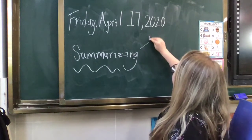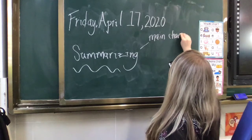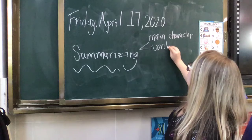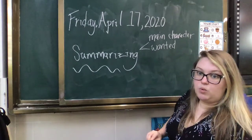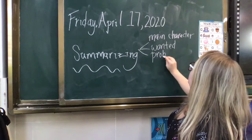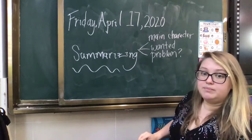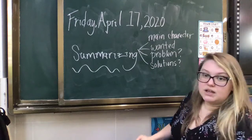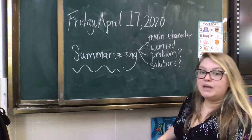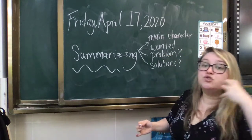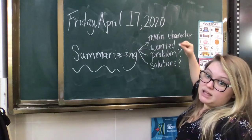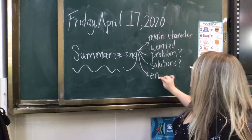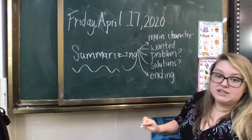Whenever we're summarizing, we have to find the main character — always find the main character. Then we have to find what they wanted. What did the main character want? Then we have to find the problem — what's the problem? What are some solutions? What did the main character try to do to solve their problem? And then last but not least, the ending.